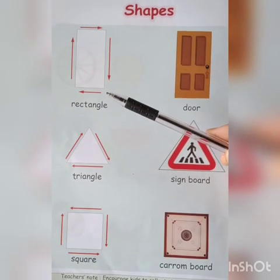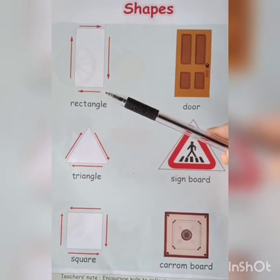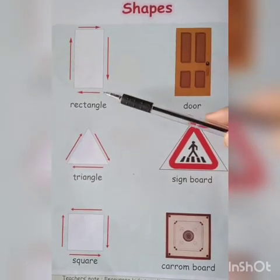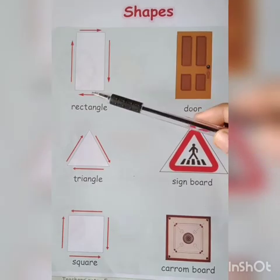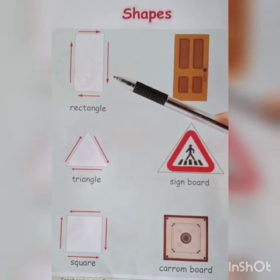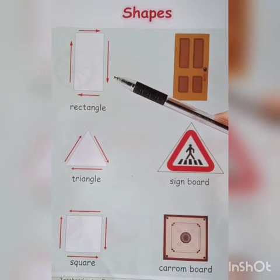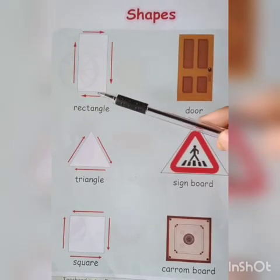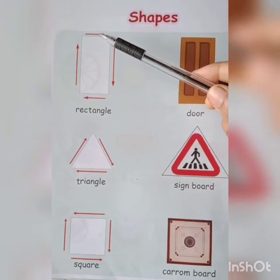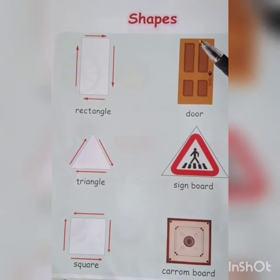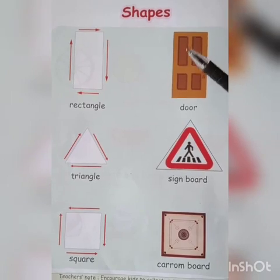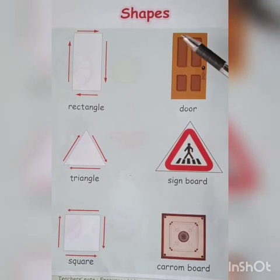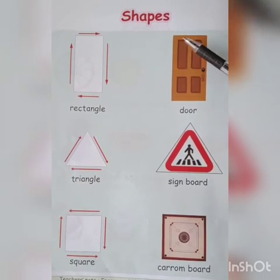The fourth one is rectangle. It has four sides, but they are not equal in size. These two sides are equal, and these two sides are equal. It looks like a door — the shape of the door.